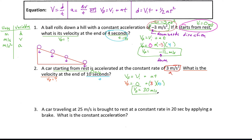So in the end, my car is going to be going 30 meters per second. Hopefully we look at this and realize that it makes sense. If I'm starting from rest and I was accelerating for 10 seconds at 3 meters per second every single second, 30 meters per second is a very, very reasonable answer. And we could go back and check our work, which you really should do with all of these problems.